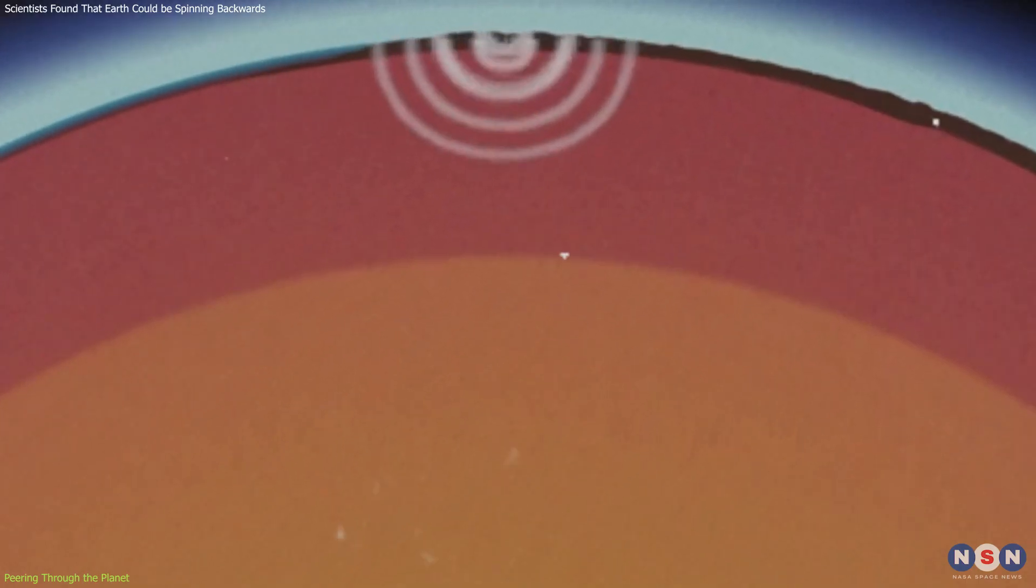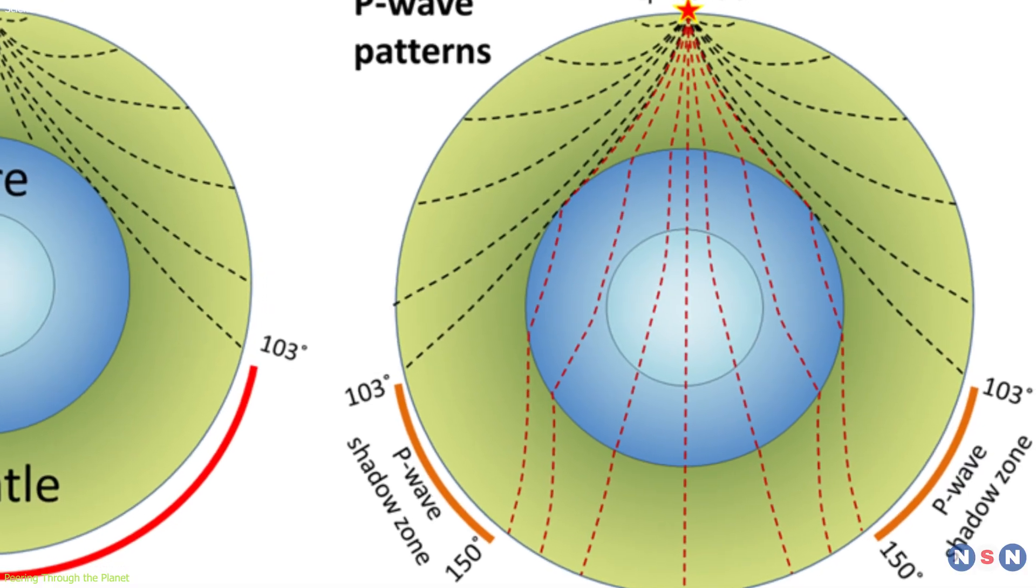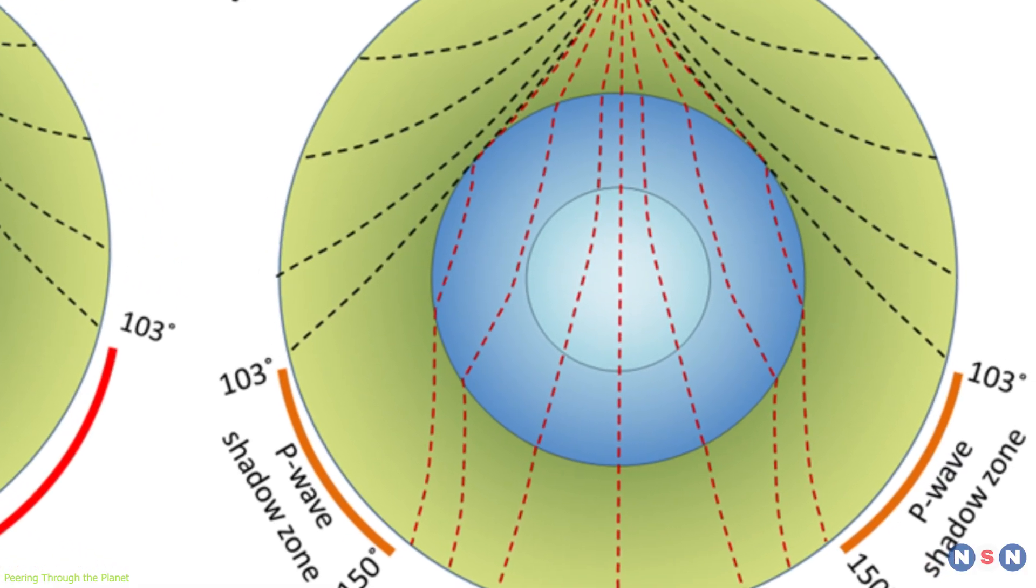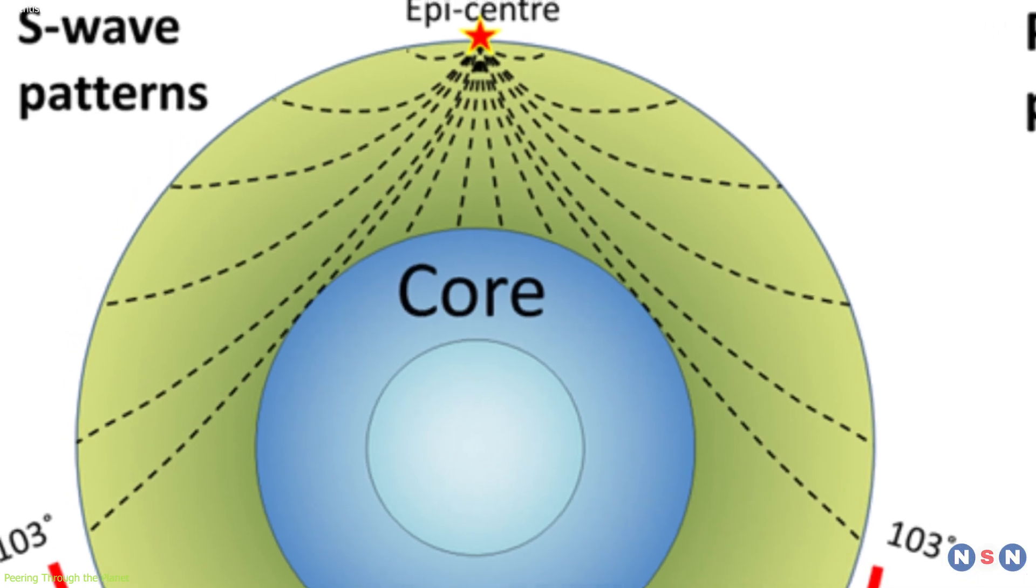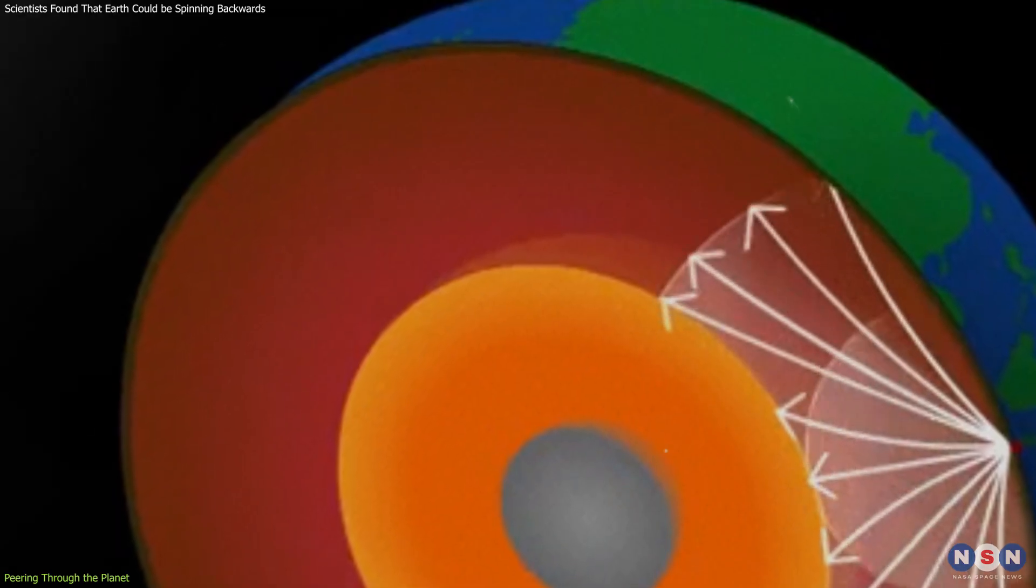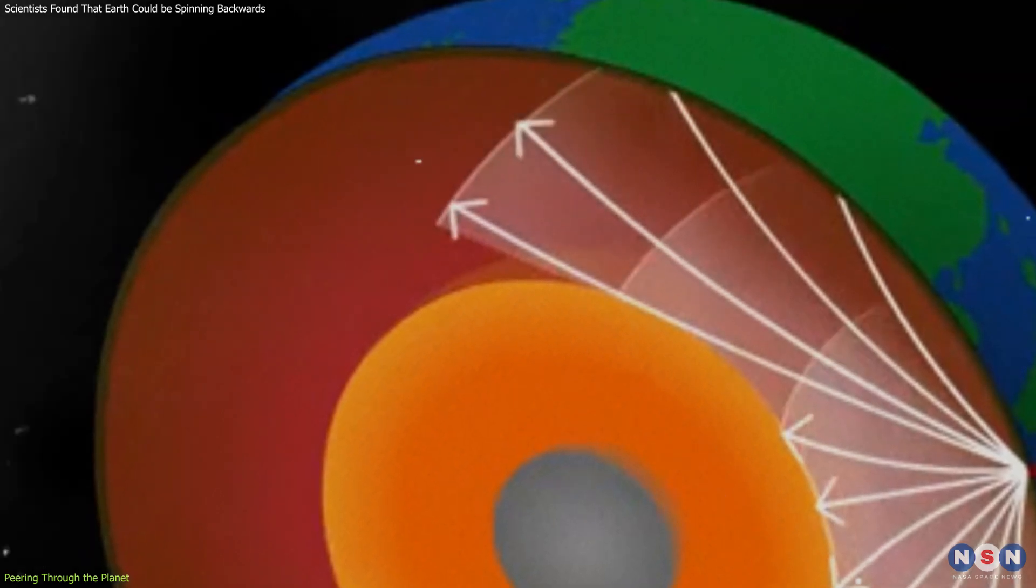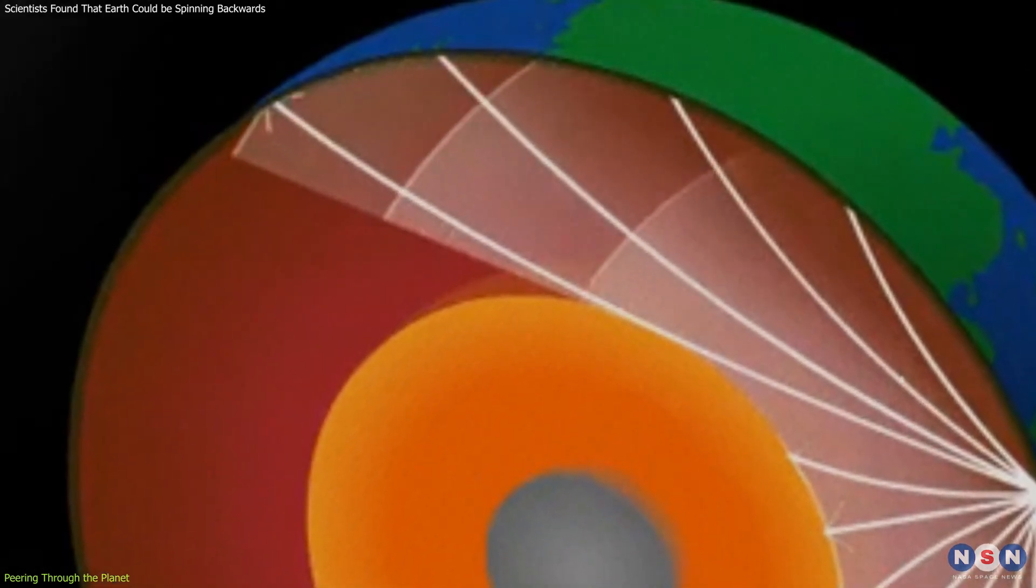These waves come in two main types: P waves, which can travel through both liquids and solids, and S waves, which only travel through solids. The behavior of these waves as they pass through the Earth helps scientists map internal structures.